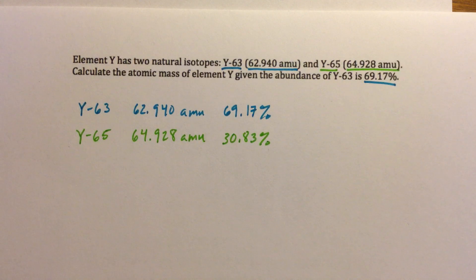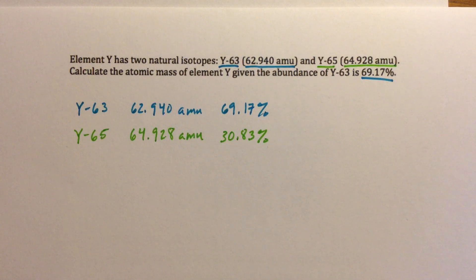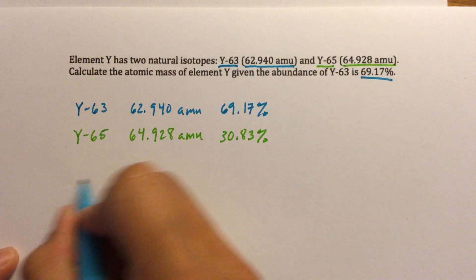Now it looks like a problem that we've done before. We have a mass and a percentage, a mass and a percentage. So now we can just plug this into our weighted average formula. That is the trickiest part about this problem. So now that we have that, I can just start setting up our calculation.